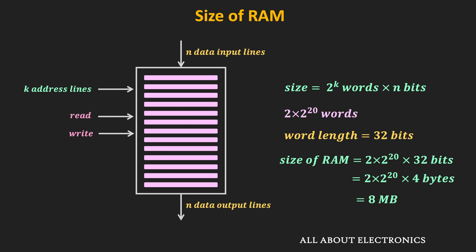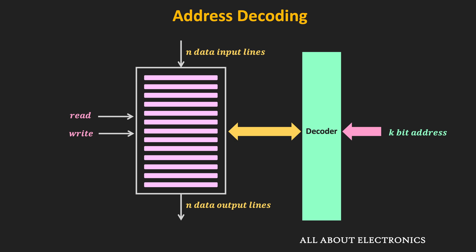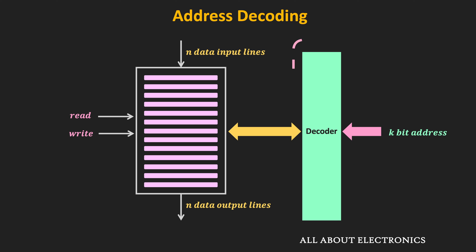So far we have seen that by applying a particular address on the address line, we can access a specific word in the memory. But we also need a digital circuit that will accept this address as input and, based on that input, select the specific word in the memory. For that, we require a decoder for address decoding. We will apply the k-bit address to this decoder, and based on that address it will select the specific word. In the next video, we will talk more about address decoding, and with the help of a timing diagram, we will also understand how read and write operations are performed in the RAM.